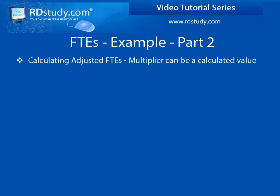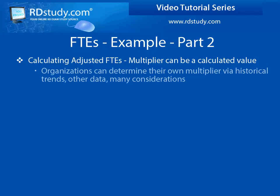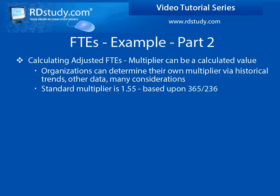Take your absolute FTEs and multiply them by a predetermined multiplier value. Organizations may determine or calculate their own multiplier values based upon their specific needs or worker requirements, but the standard multiplier is 1.55.